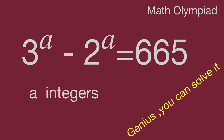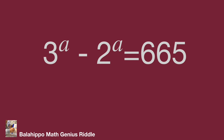The question is 3 power A minus 2 power A equals 665, and A is an integer. Find the value of A. How to get it? The number 665 seems not so big. If we want to get the value of A, we may try to guess the value of A starting from A equal to 1. Calculate 3 power 1 minus 2 power 1, then try A equal to 2, 3, 4, and finally find the right value to match the equation.